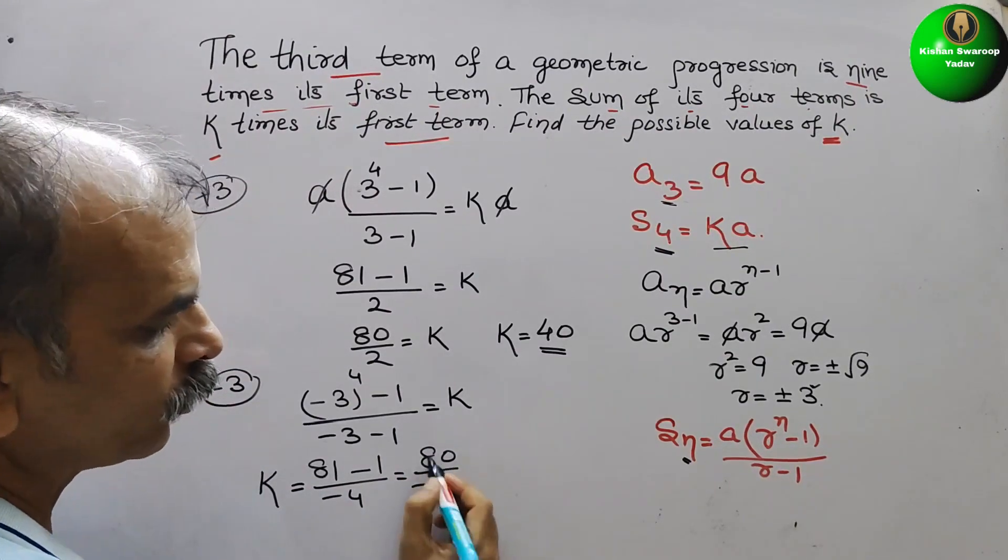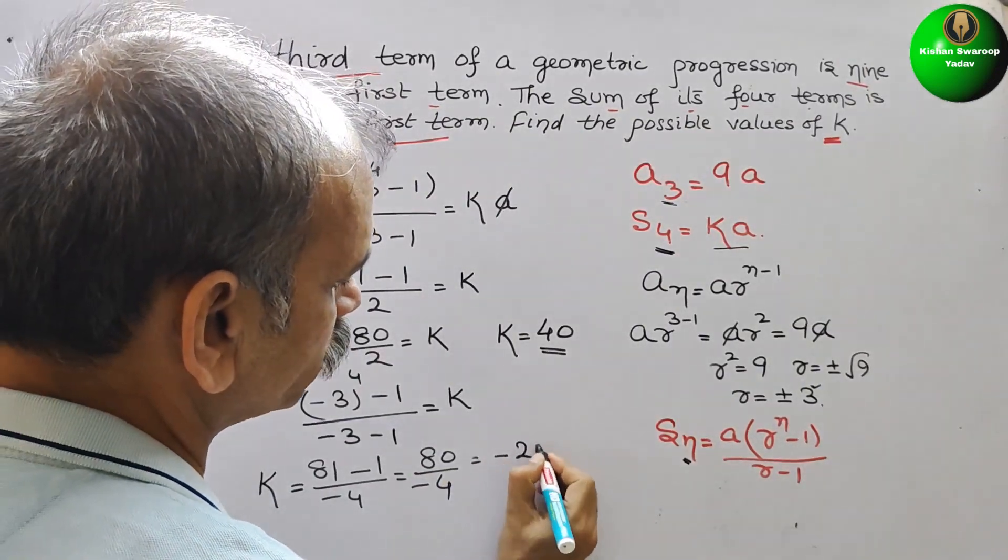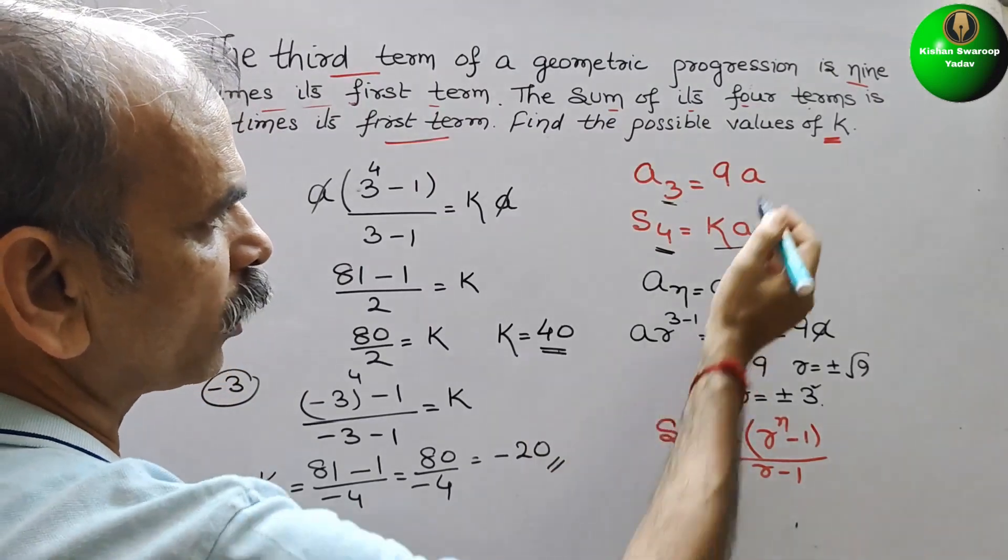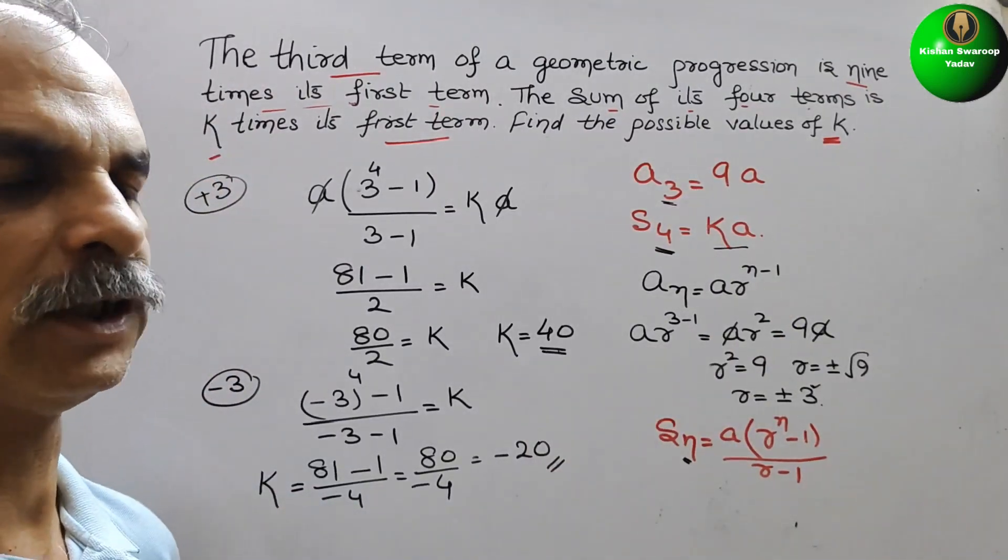So this is 80 by, divided by minus 4. Now reduce it by 4. So here you will get minus 20. These are your two possible values for k: 40 and minus 20. Thank you.